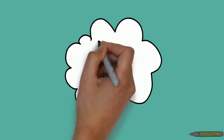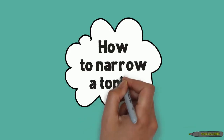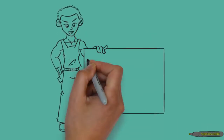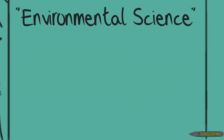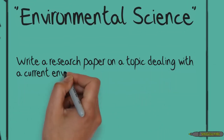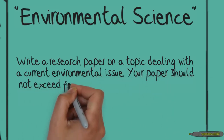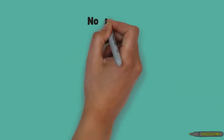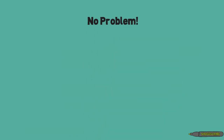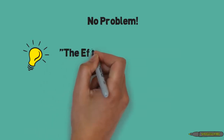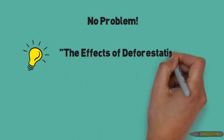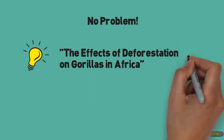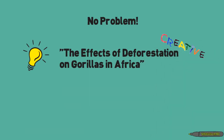Sometimes it can be really difficult to find a topic that is not too broad. Here are a couple of words of advice on what to do when your topic seems too broad. Let's say you are in an environmental science class. Your teacher gives you this assignment prompt: write a research paper on a topic dealing with a current environmental issue. Your paper should not exceed five pages and should be based on a topic that strongly interests you. You say, that's no problem — I know exactly what to write about. I saw a show the other day on TV, and it talked about the effects of deforestation on gorillas in Africa. I think that's a great topic. I know it interests me, and it's creative.